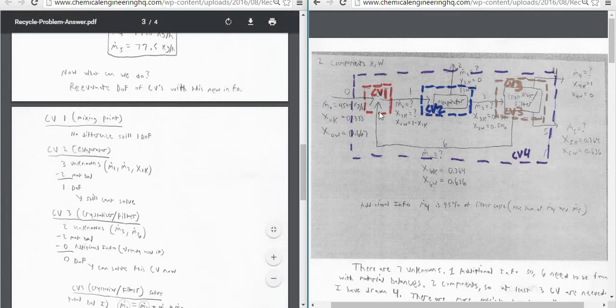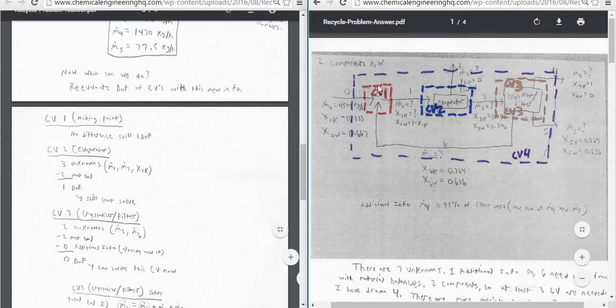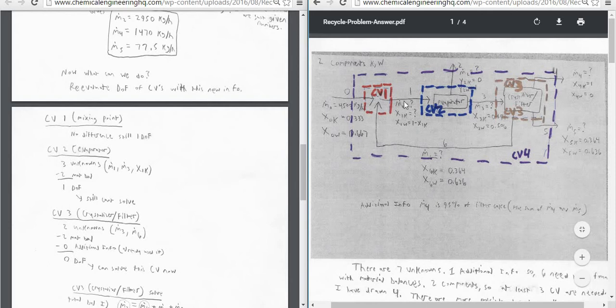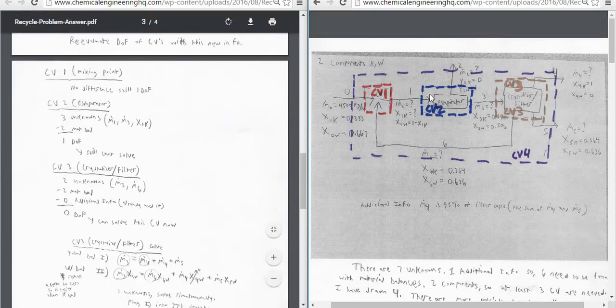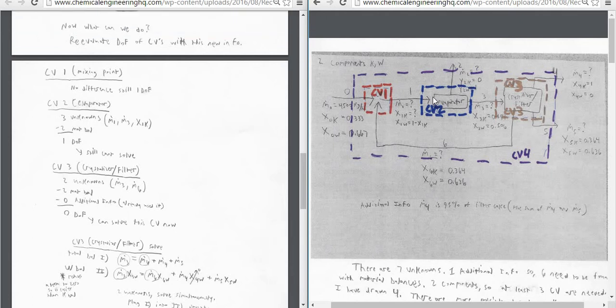So if we look at control volume 1, which is the red one over here, we haven't solved for any of these variables. So the degree of freedom is the same. We still can't solve it. It still has one degree of freedom. If we look at CV2, the evaporator, again, we have three.